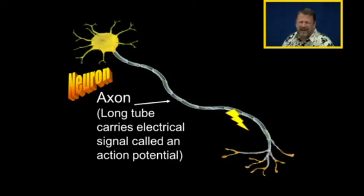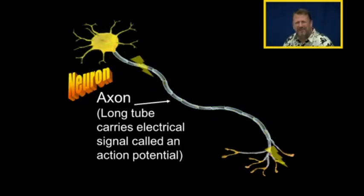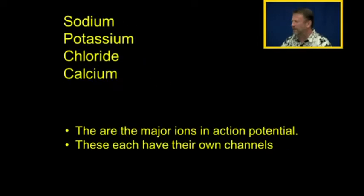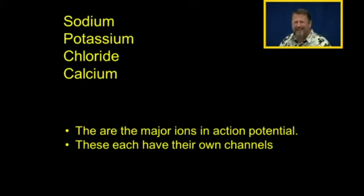Neurons have axons. Axons are long tubes that carry electrical signals called action potentials. The major ions in action potential are sodium, potassium, chloride, and calcium, and they are going to have their own channels.